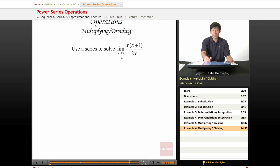Now we're looking for the limit as x approaches 0 of ln(x+1) over 2x. So here's another common Maclaurin series, ln(x+1) or ln(x) in general. So using a series to solve this limit,